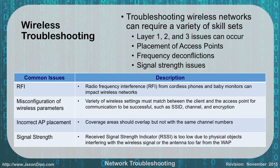Incorrect access point placement: for 2.4 GHz networks, use channels 1, 6, and 11 in a honeycomb pattern with 10–15% overlap, but adjacent cells should not share the same channel — channel 11 and channel 1 should be next to each other, not channel 1 and channel 1. Signal strength: if the received signal strength indicator (RSSI) is too low due to physical objects or antenna distance from the access point, boost the signal on the router if supported, or move the user closer to the access point.